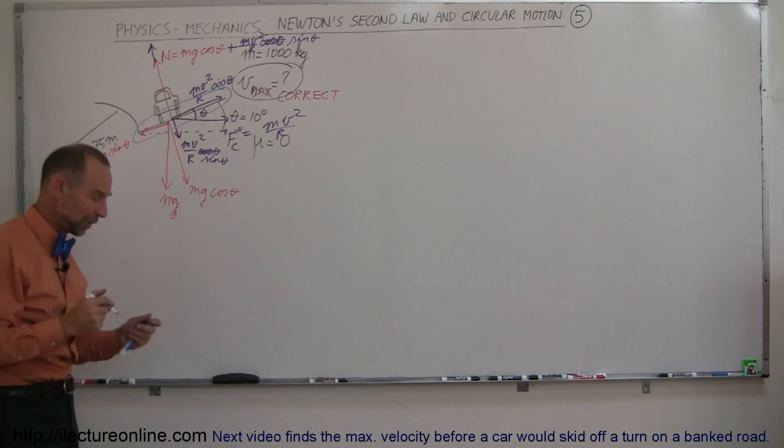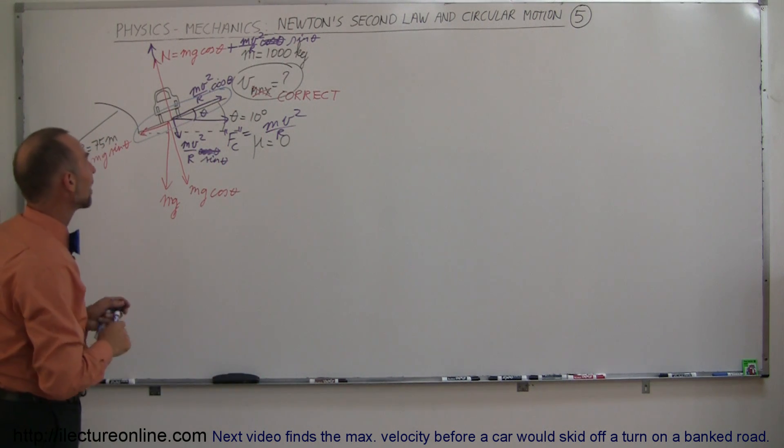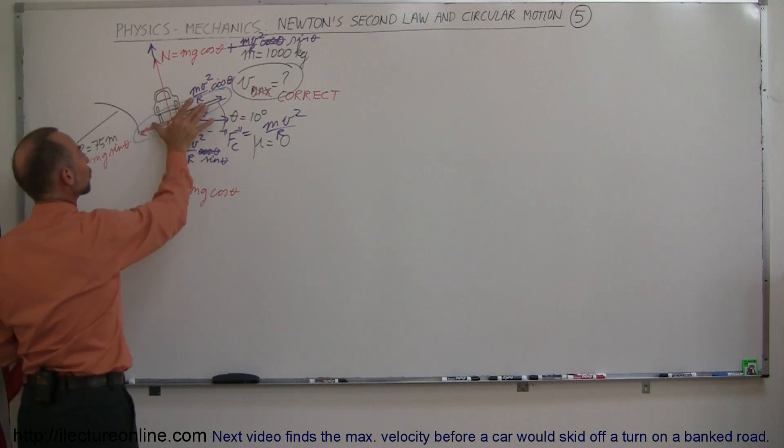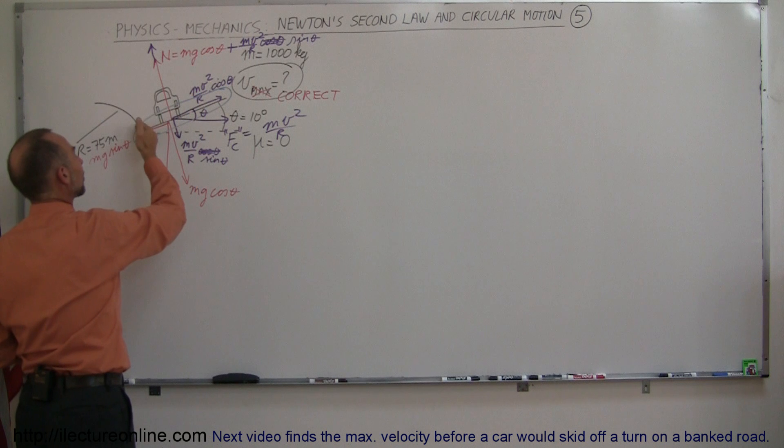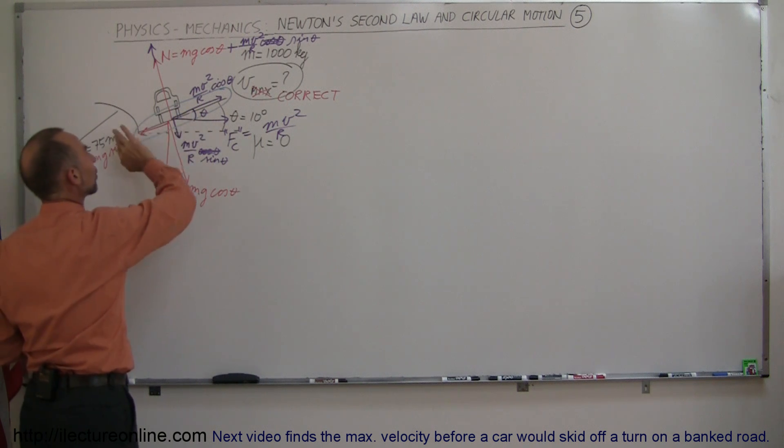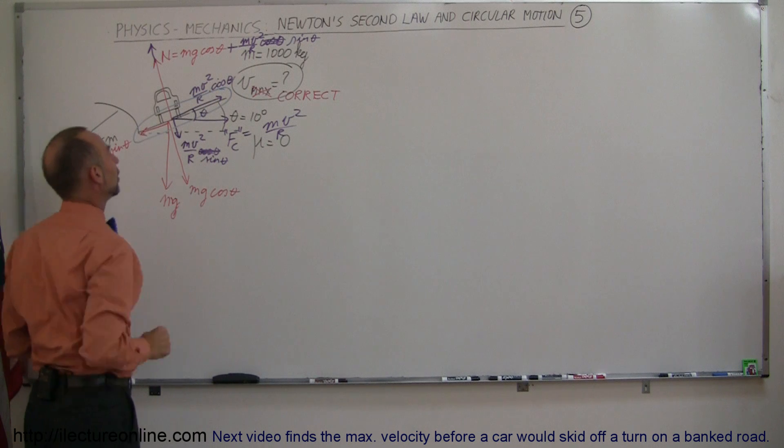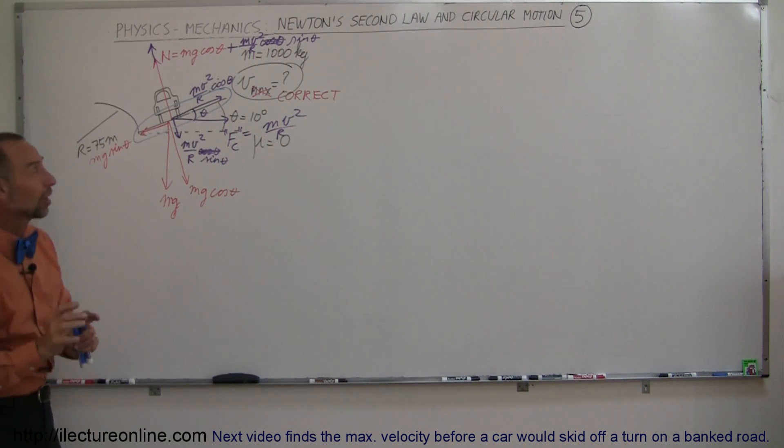Now that we've corrected that little problem, now realizing again that these two forces control what's going to happen to the car. If this is bigger than this, the car will slide down. If this is bigger than this, the car will slide up. Of course, this is controlled by the velocity of the car. So if we set them equal to each other, and then we solve for V, we get the exact velocity that keeps the car from either sliding down or sliding up the incline.